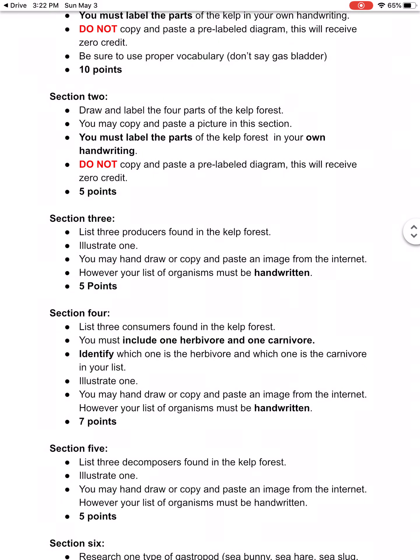Section four is also a list — of consumers. Just a list, not sentences. You're listing three consumers found in the kelp forest. One has to be an herbivore and one has to be a carnivore. The other one can be whatever you want. You're going to identify which one is the herbivore and which one is the carnivore in your list, and you're going to provide a picture of one — either you drew it or you copy and pasted it from the internet. Your list of creatures has to be handwritten.